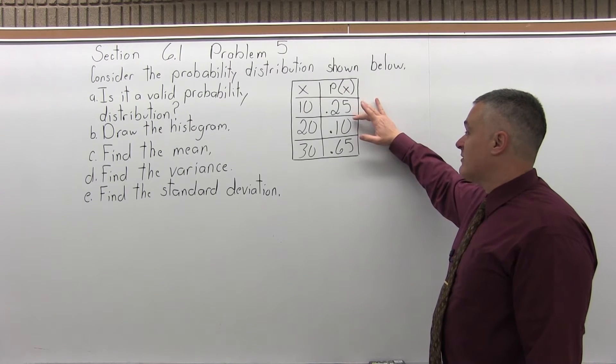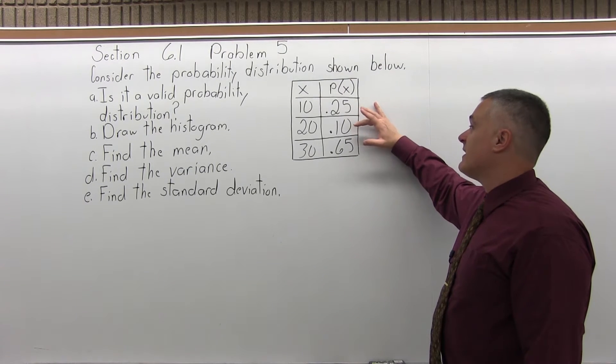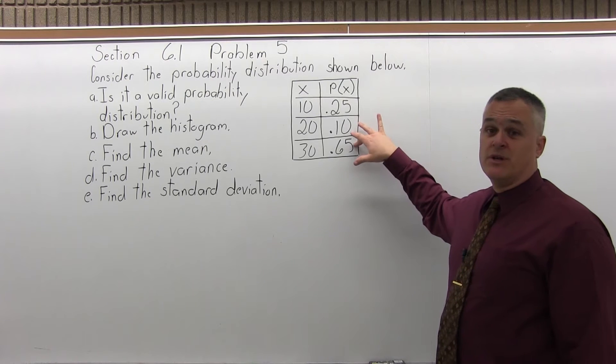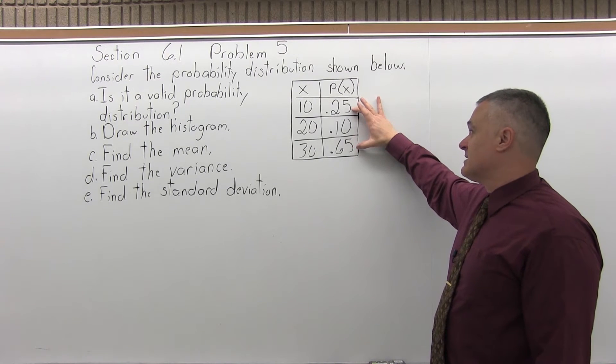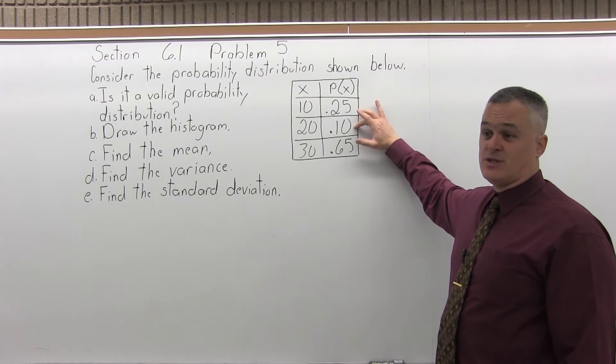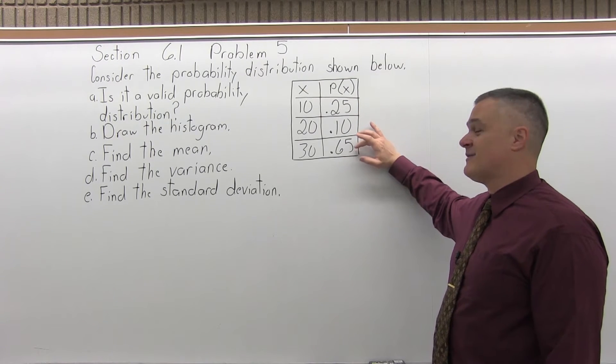So if you add 0.25 plus 0.10 is 0.35, and then 0.35 plus 0.65 is one, or 1.0. Again, I think of this as money, $0.25 and $0.10 is $0.35, $0.35 and $0.65 is a dollar.